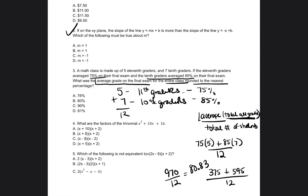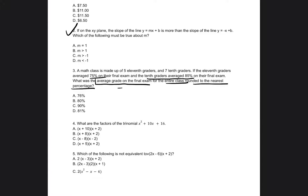They want us to round to the nearest percentage. So 80.83 — we look to the right of the zero, and the digit is 8, which is 5 or above, so we round the 0 up to 1, giving us 81%. The answer is D. If you need extra practice rounding to the nearest whole number, check out my Accuplacer arithmetic workbook, which covers basic arithmetic, decimals, rounding, and things like that.